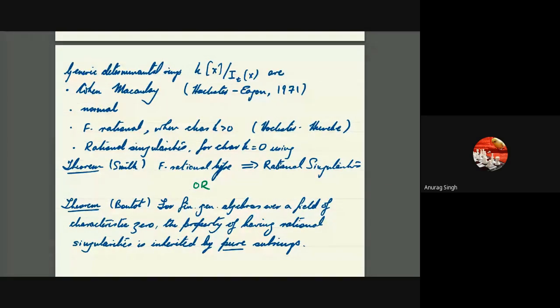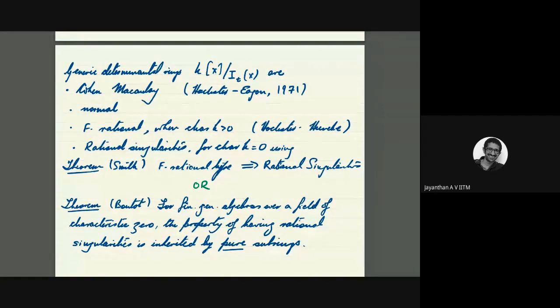There is a question from Sudhir Ghorpadeh: when you say the determinantal ring is a ring of invariants, are you looking at the maximal minor case? No, in general. The action is as on the slide, but it takes a proof that when K is infinite there are no more invariants than we claim — that the entries of YZ do generate. This can be found in Hermann Weyl's 'Classical Groups' in this generality.